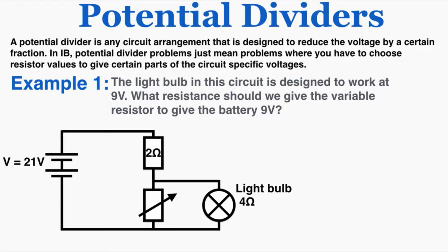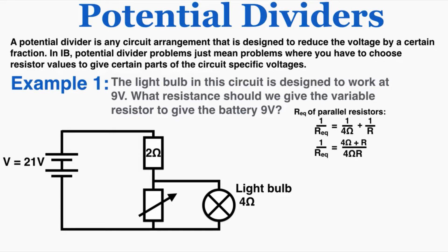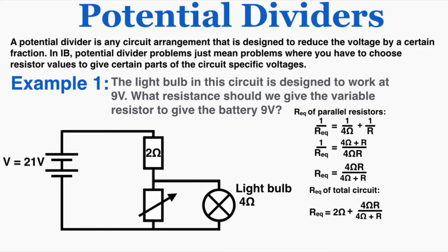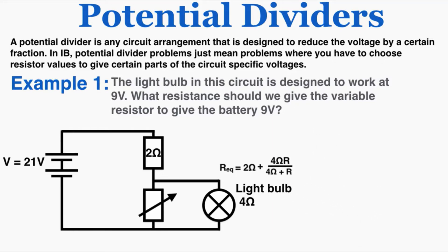As with most physics problems, I'm going to start by writing down everything I know. First, I can write an equation for the equivalent resistance of the parallel resistors — I'm calling the variable resistor just R, which is what I'm solving for. When I combine these, I get an expression for the equivalent resistance. Because that parallel arrangement is in series with the 2 ohm resistor, the total equivalent resistance is just the sum of those two resistances.